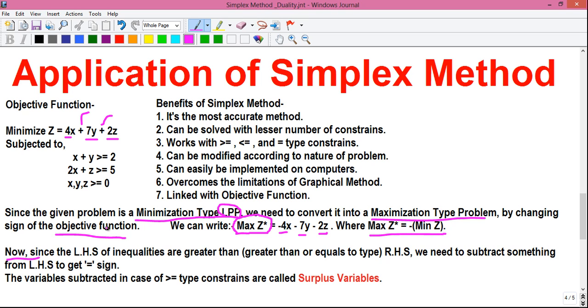since the left hand side of the inequalities are greater than, since they are greater than or equal to type, then the RHS, we need to subtract something from the left hand side to get them balanced and to get the equals to sign. So,